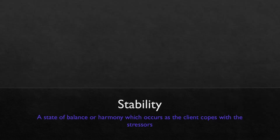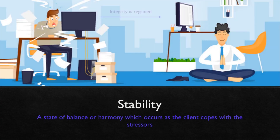Next is stability. Stability is a state of balance or harmony, which occurs as the client copes with the stressors. When we cope up with the problems we have, automatically we regain our health or integrity — either physical or mental — and that is a state of balance or equilibrium between the internal environment within us and the external environment around us.